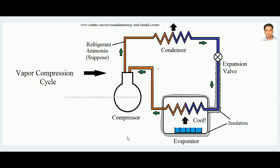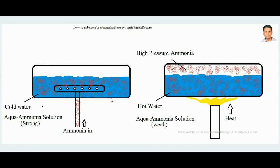In the vapor absorption cycle, the job of the compressor is eliminated. In the aqua ammonia system, ammonia has a property that when it is mixed with cold water it is readily soluble — the affinity of ammonia to dissolve in water is high when the water is cold. Here I am showing a vessel with cold water where ammonia is mixing in, forming what is called the aqua ammonia solution.